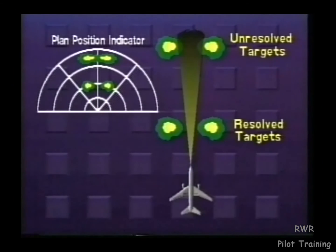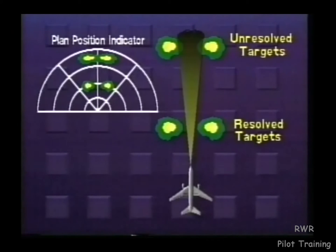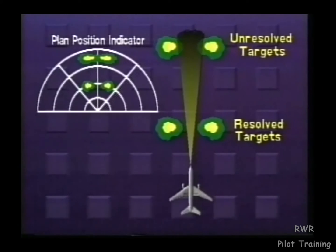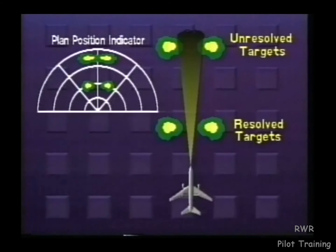One of the effects of beam spreading is to reduce the radar's target resolution capability — that is, its ability to separate two targets at the same range but located at slightly different viewing angles. When the distance between two targets at the same range is less than the diameter of the beam, the two targets merge together on the display and appear as one. As the aircraft approaches the targets and the beam diameter at their location becomes smaller than the distance between them, they are resolved as two separate targets.